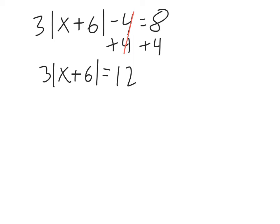Then we have to get rid of that 3 in front of the absolute value. So again, we do the opposite. It's multiplying by 3, so we need to divide by 3. So divide both sides by 3. And that cancels the 3's out here to leave just the absolute value of x plus 6. And on the right side, we have 4.